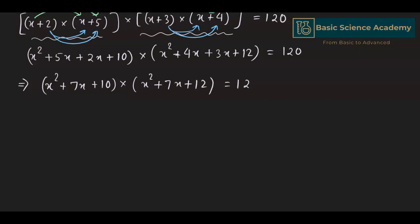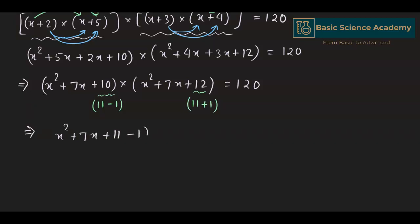We can write 10 as (11 − 1) and 12 as (11 + 1). So this gives us (x² + 7x + 11 − 1) multiplied by (x² + 7x + 11 + 1) equals 120.